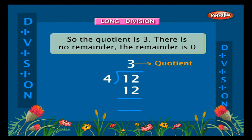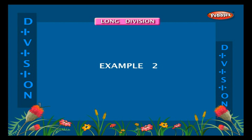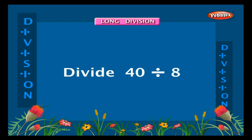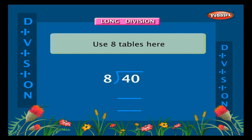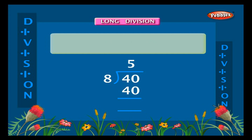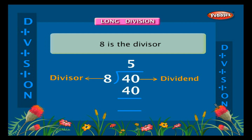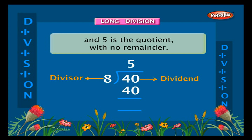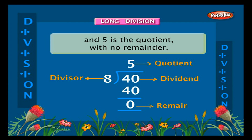Example two: divide forty by eight. Using eight tables: eight fives are forty. Here forty is the dividend, eight is the divisor, and five is the quotient, with no remainder.